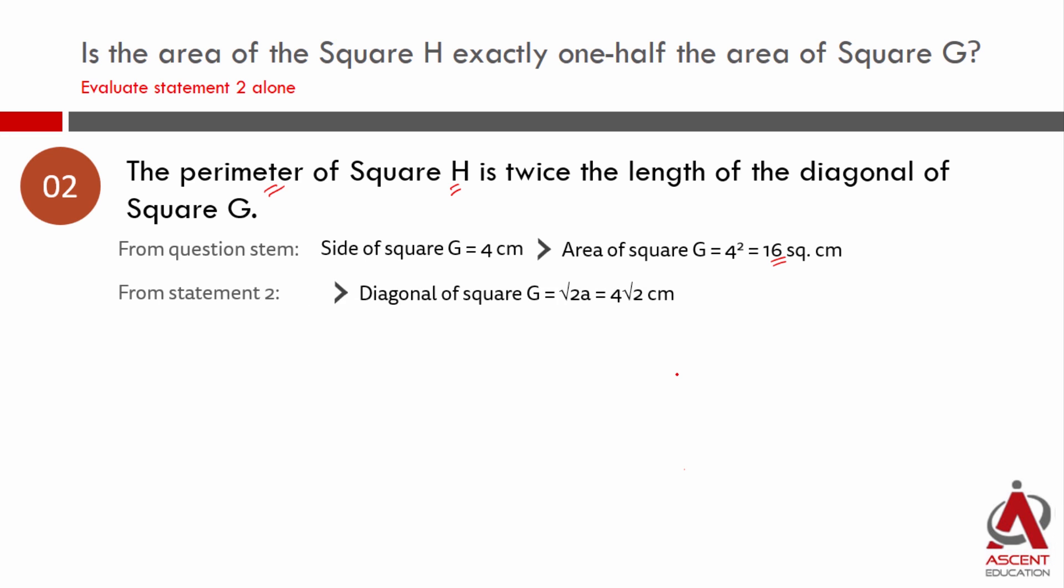Diagonal of square G: diagonal of a square is equal to root 2 times its side. Side of square G is 4, so diagonal of square G is 4 root 2 centimeters. Perimeter of square H is 2 times the diagonal of square G. Diagonal of square G is 4 root 2, so perimeter of square H is 2 times that, which is 8 root 2. Perimeter is always 4 times the side, so side will be perimeter divided by 4. Side of square H is one-fourth of that, which is 2 root 2 centimeters.